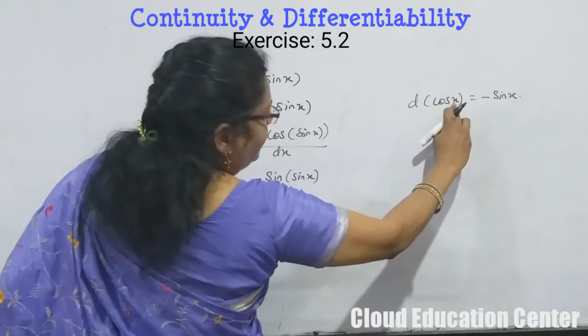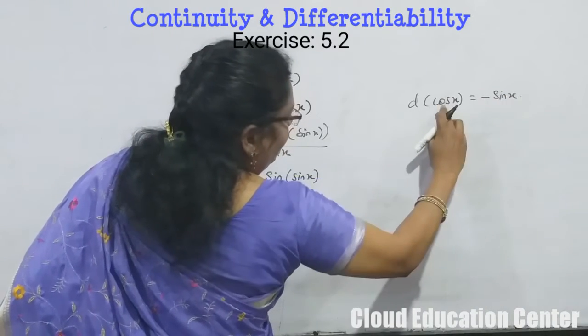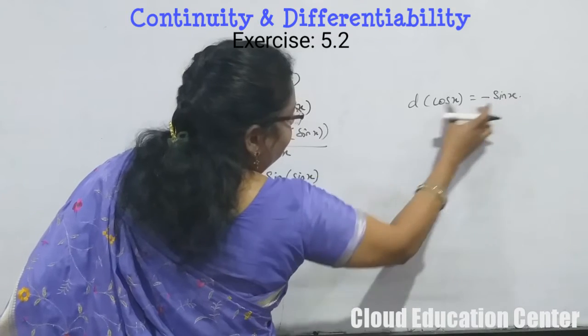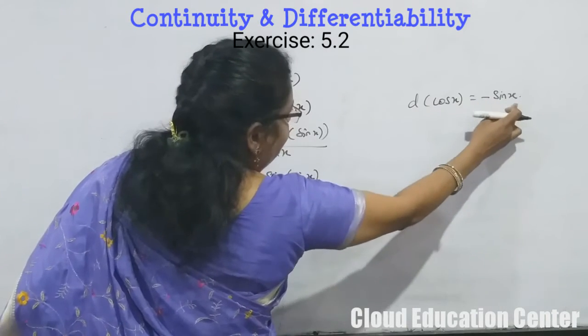Remember when we have x, we will write x here. d(cos x)/dx = -sin x. Differentiation of cos x equal to -sin x.